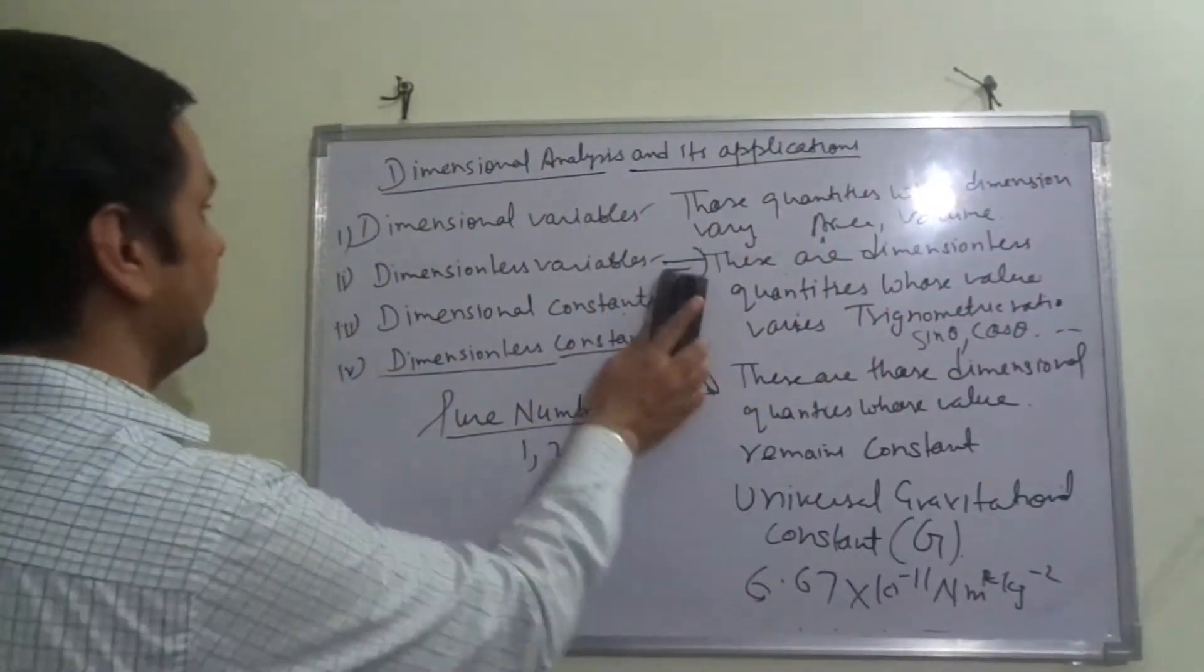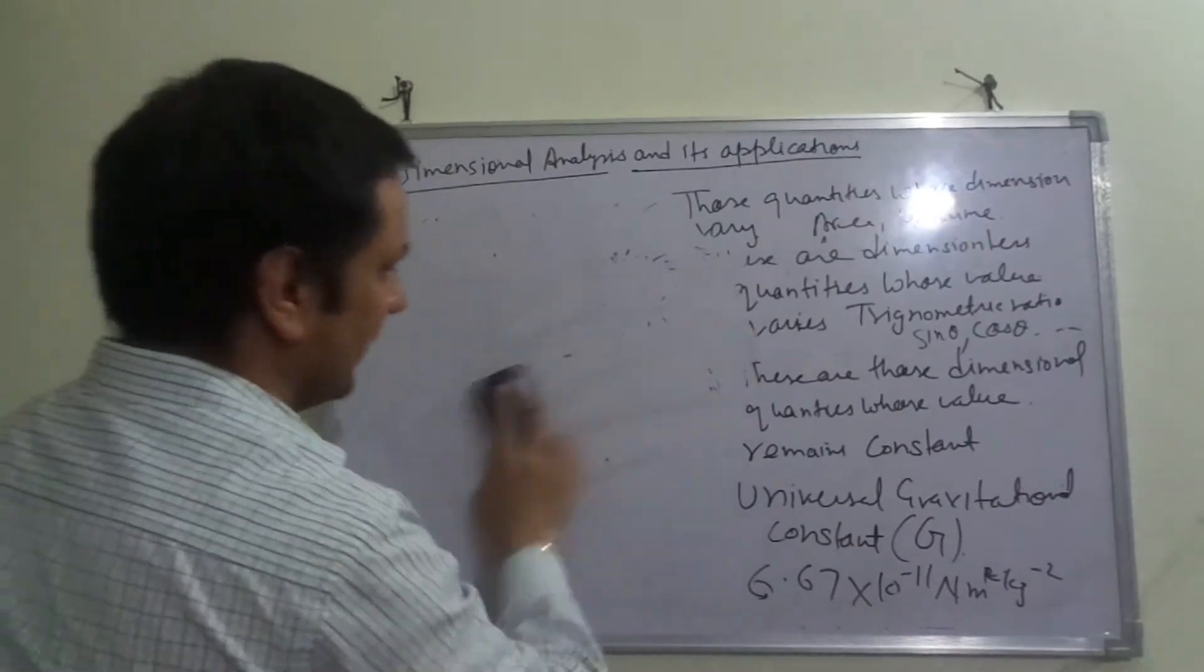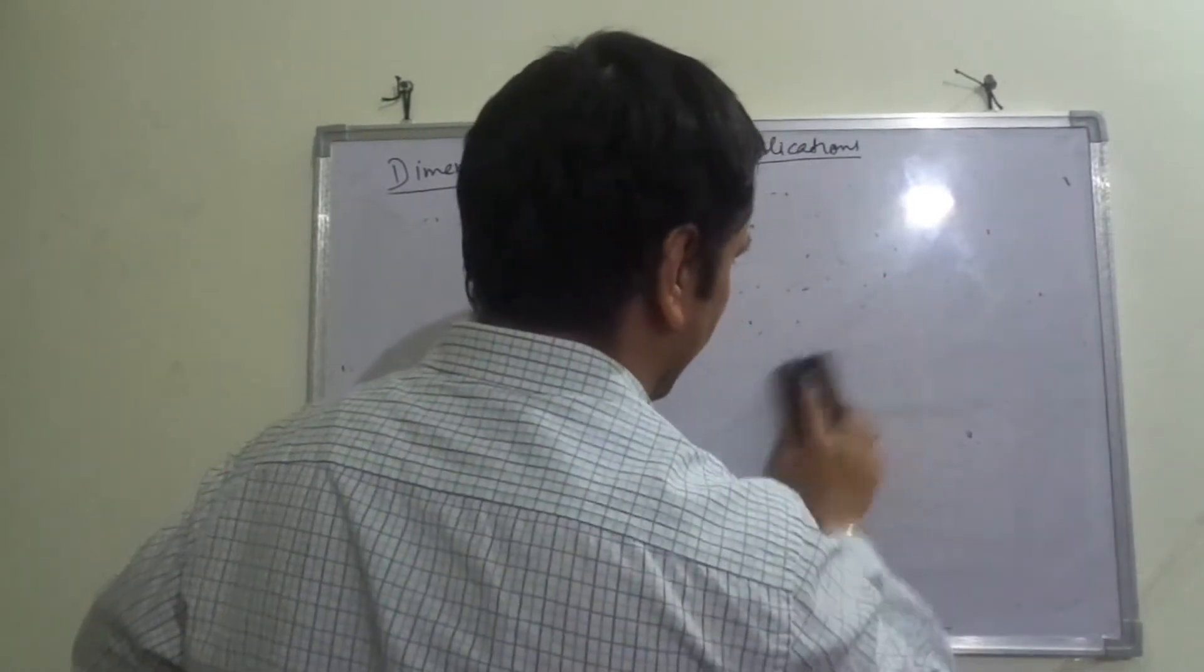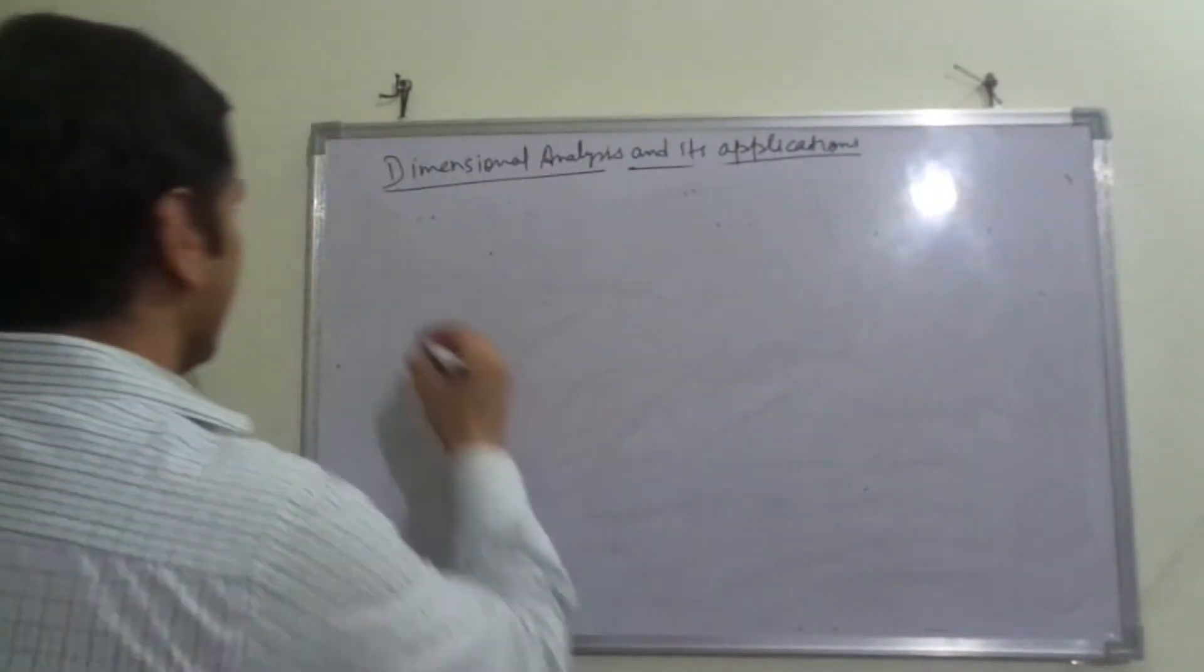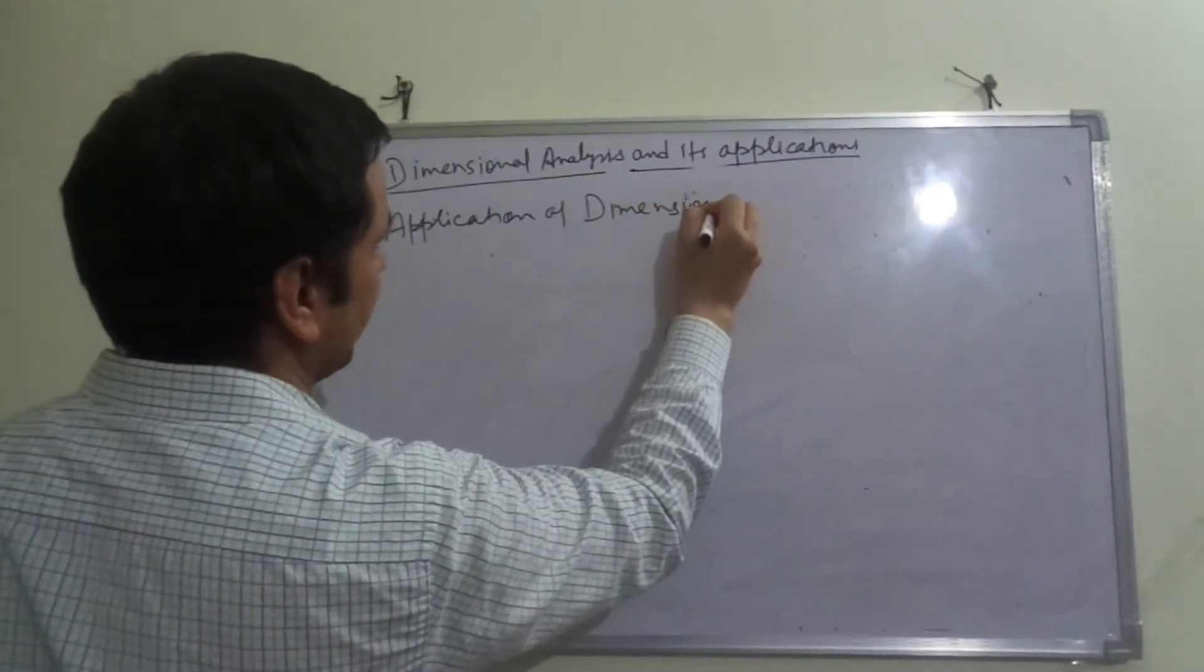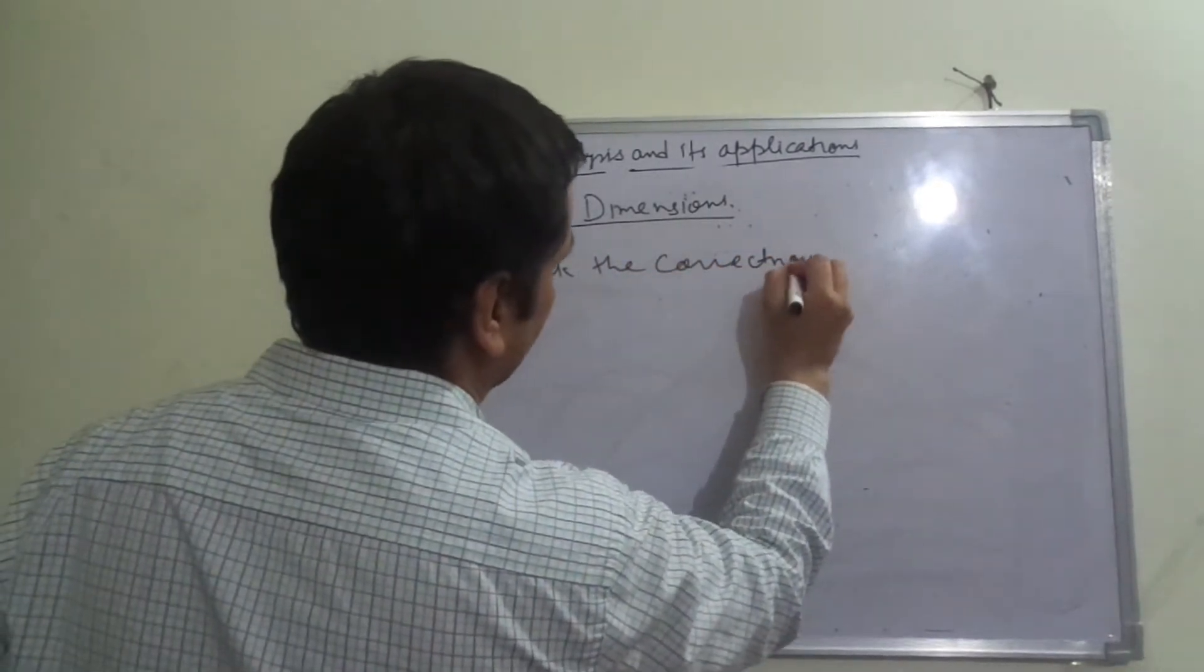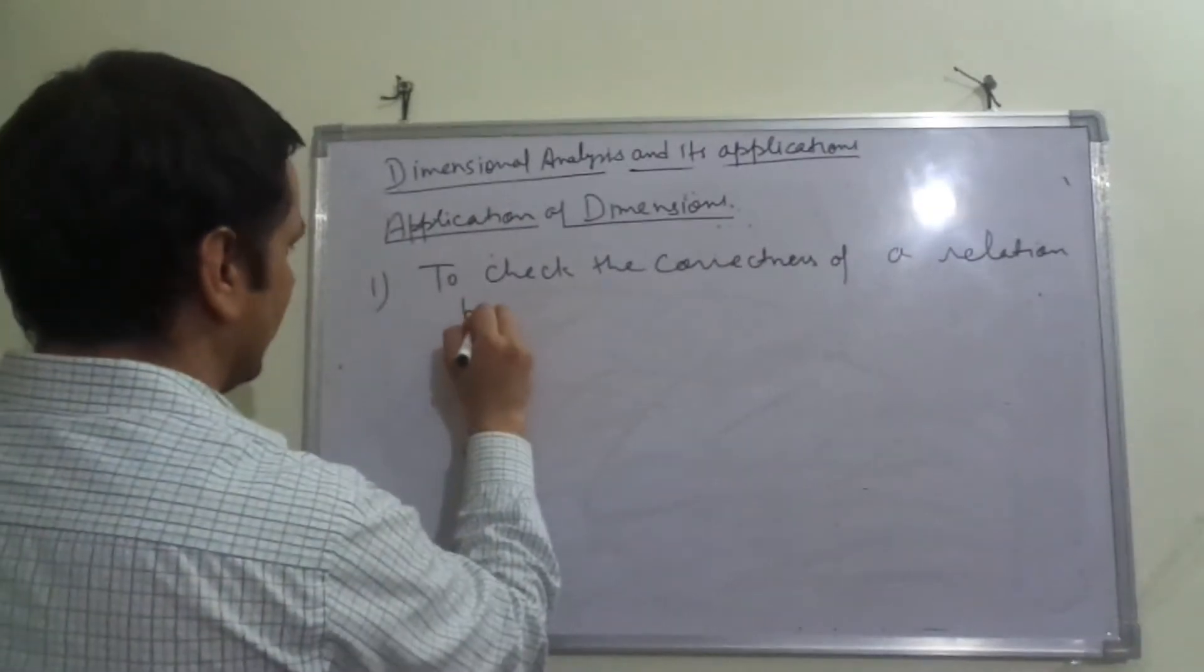Now we move further to the most important part: application of dimensions. Number one thing is to check the correctness of a relation by dimensional indices.